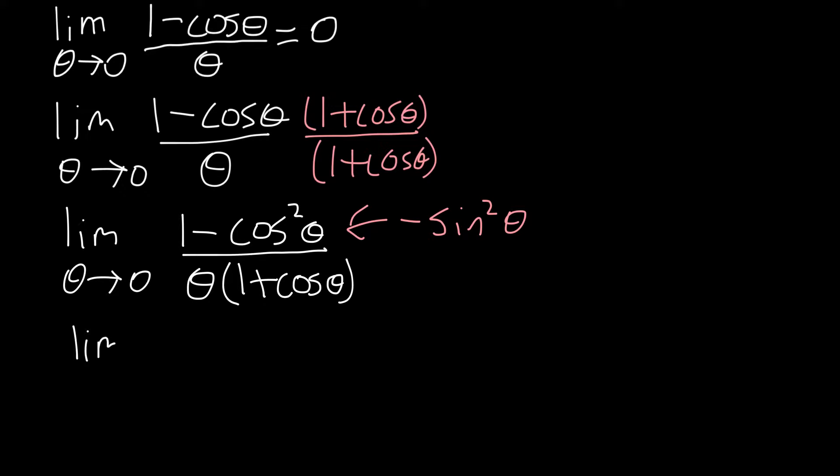So, if we write out the limit as theta goes to 0, minus, and I'm going to write sin theta times sin theta, all over theta times 1 plus cos theta.